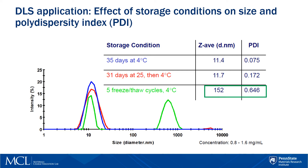The average diameter and polydispersity index were also reported. The polydispersity index estimates the width of the distribution. Samples that underwent five freeze-thaw cycles — shown as the green line on the plot — show a larger average diameter and higher PDI value, indicating wider size distribution compared to other samples. The second peak at about 700 nm suggests particle aggregation at these storage conditions.